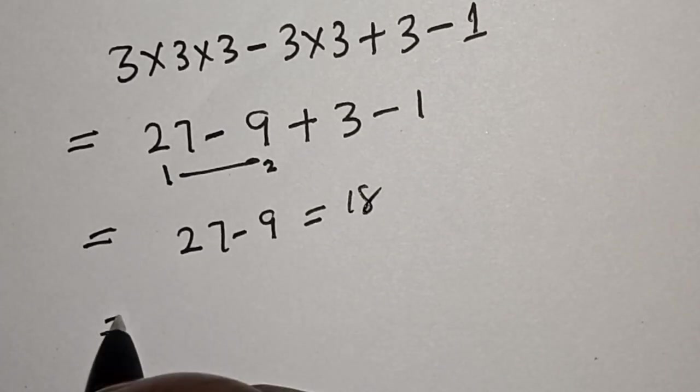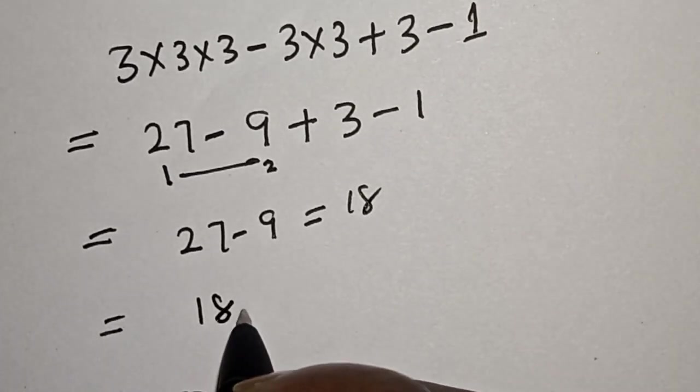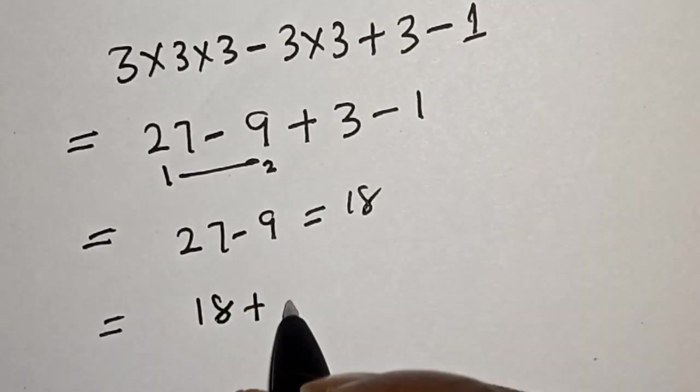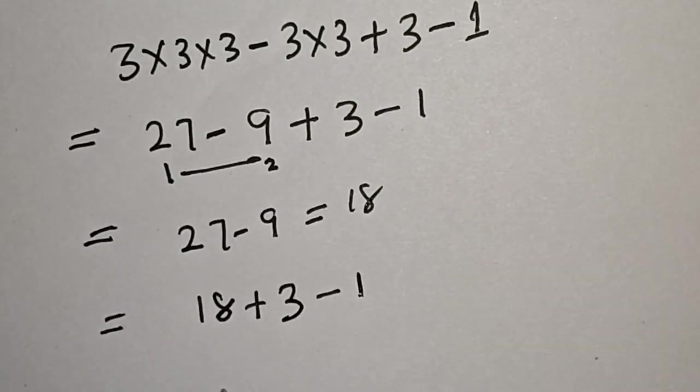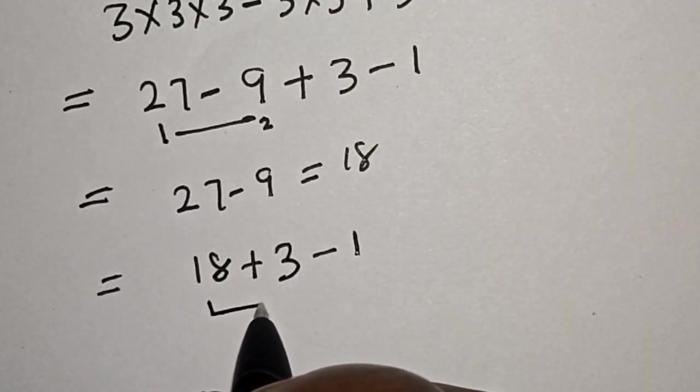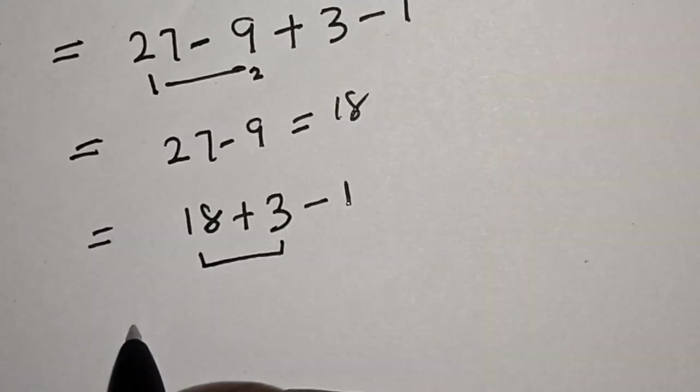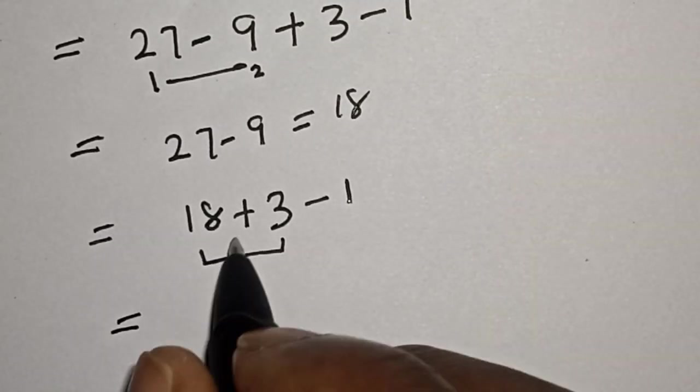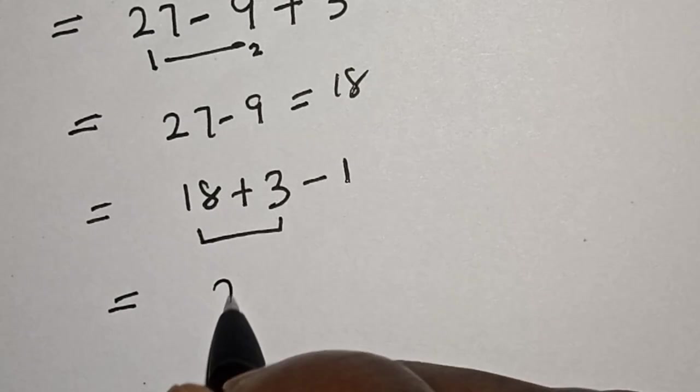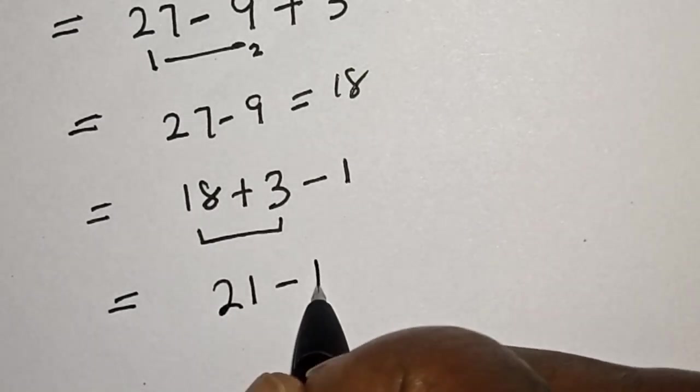Then we have 18 plus 3 minus 1. Then let's work with this first 2 again. This is equal to 18 plus 3. That is 21 minus 1.